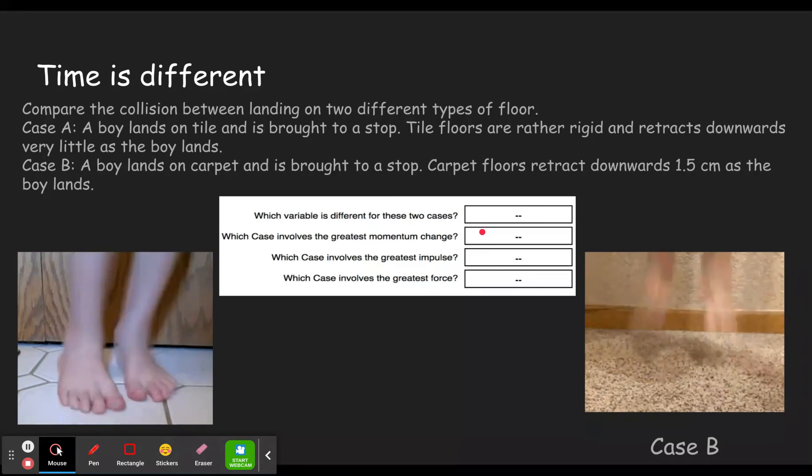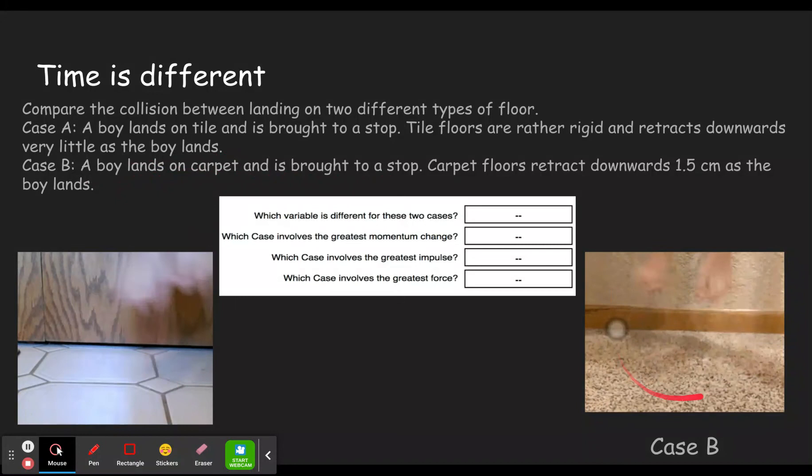Anyways, let's go on to our sample problem. In this case, you can see my son jumping on the ground here. Here he's landing on tile and here he's landing on carpet. Compare the collision between landing on two different types of floor. Case A, a boy lands on tile and is brought to a stop. The tile floors are rather rigid and retract downwards very little as the boy lands. Case B, a boy lands on carpet and is brought to a stop. Carpet floors retract downwards 1.5 centimeters as the boy lands.